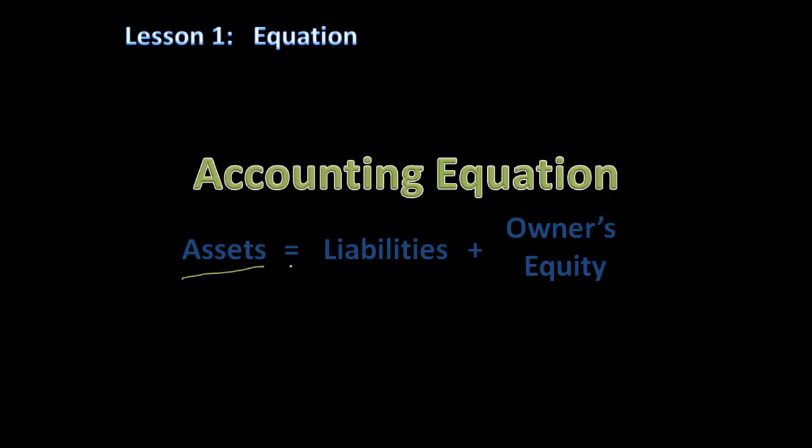The accounting equation looks like this: Assets equal liabilities plus owner's equity. We are going to say the equal sign creates a left and a right side to the equation. Assets are going to be on your left side and your liabilities and owner's equity are on your right side.